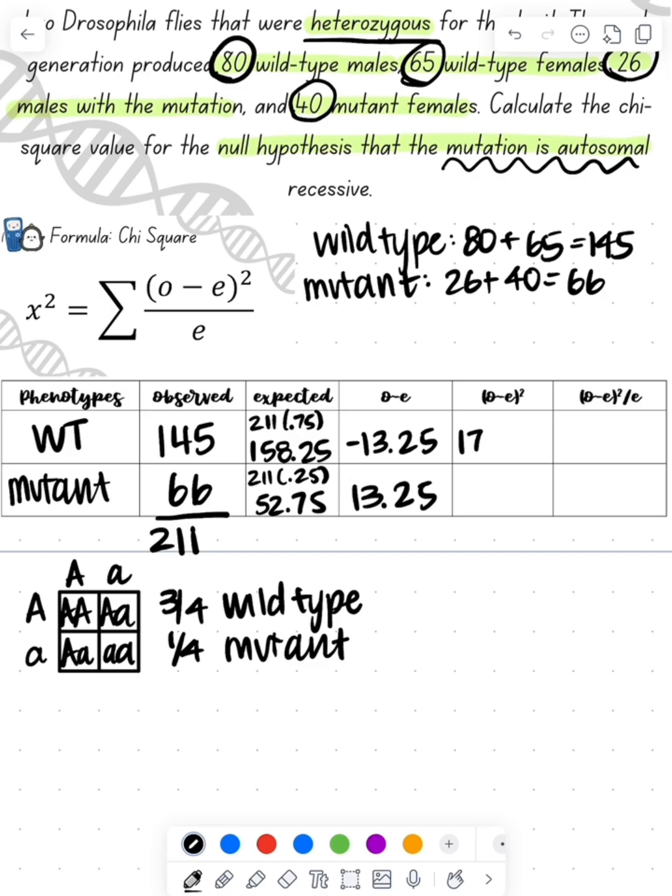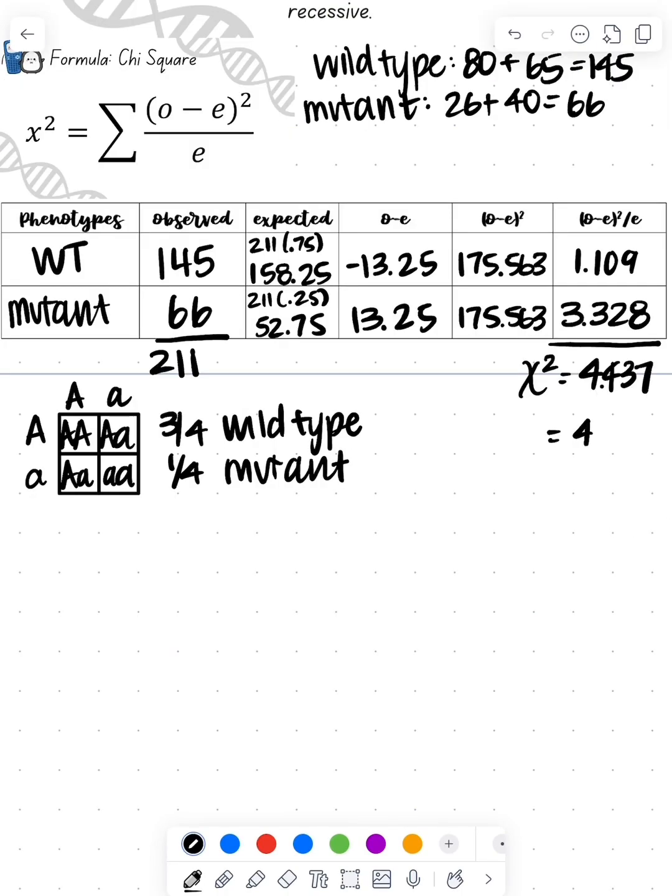I'll take my observed minus expected. I do the observed minus expected squared. And then I'm going to do the observed minus expected squared over the expected, and that's going to give me my final value. I'm going to add those together to get the summation for my chi-square calculated value, and that's 4.437.